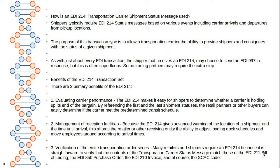The next question is: how is the EDI 214 Transportation Carrier Shipment Status Message used? A shipper typically requires EDI 214 status messages based on various events, including carrier arrivals and departures from pickup locations. The purpose is to allow a transportation carrier the ability to provide shippers and consignees with the status of a given shipment. As with other EDI transactions, the shipper that receives an EDI 214 may choose to send an EDI 997 functional acknowledgment in response, though this is sometimes considered optional.